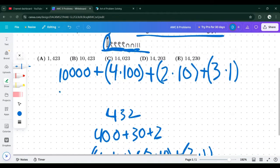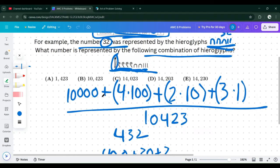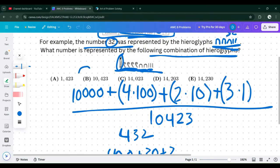We can just add up and find the sum right here. We'll get 10,423. So the answer to this problem is going to be B.